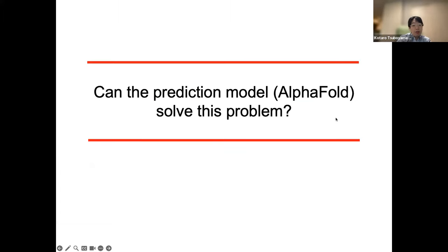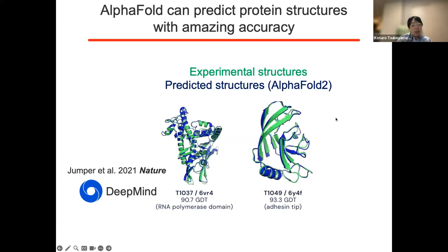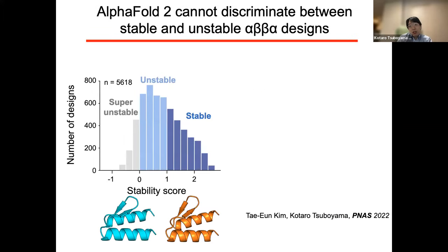I'd like to talk about AlphaFold2 very briefly. As you may know, AlphaFold2 can now predict protein structure very, very accurately. I'm now showing you two examples — the green one represents the structure solved by X-ray crystallography, and blue means the structure predicted by AlphaFold2. As you can see, these two models are almost perfectly identical, which means AlphaFold2 can now predict protein structure with amazing accuracy. But unfortunately, AlphaFold2 is not so useful in de novo protein design.